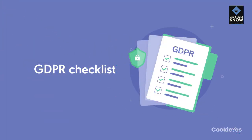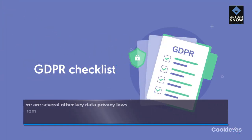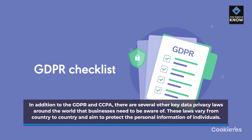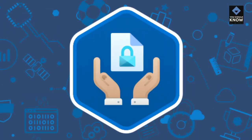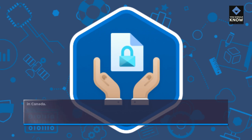In addition to the GDPR and CCPA, there are several other key data privacy laws around the world that businesses need to be aware of. These laws vary from country to country and aim to protect the personal information of individuals. One such law is the Personal Information Protection and Electronic Documents Act, or PIPEDA, in Canada.